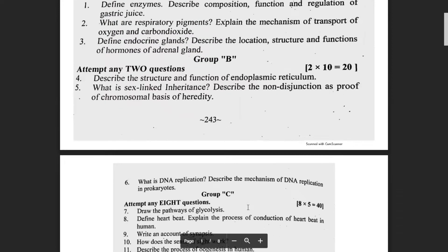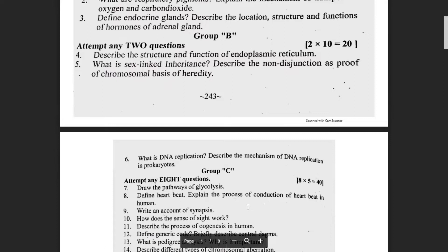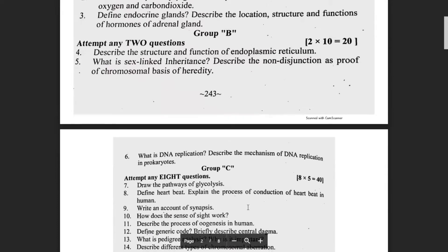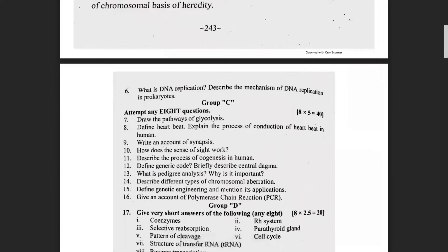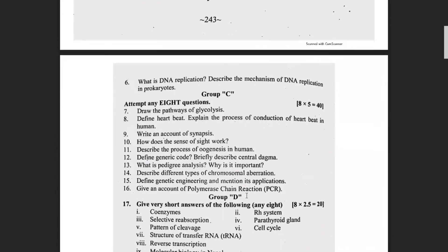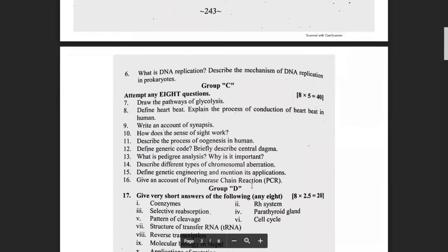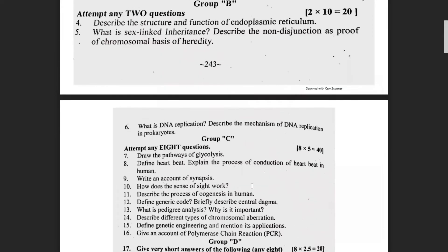Now, group B is the first section of questions. Group B questions cover cell biology, molecular biology, and genetics. You can see the questions of group B and can skip questions in group B. Now, looking at group C — group C is the short-question section. In group C, we solve 10 questions and each question carries 5 marks, so 8 into 5 equals 40 marks.